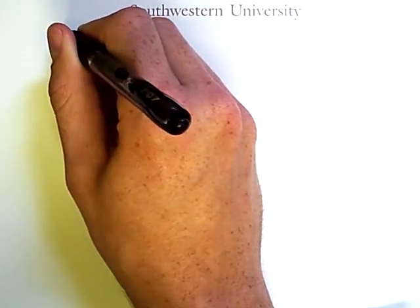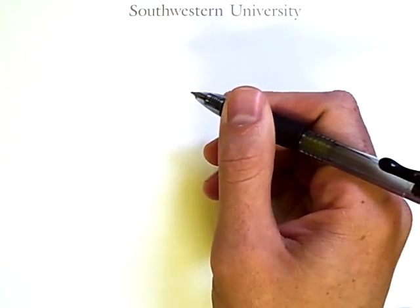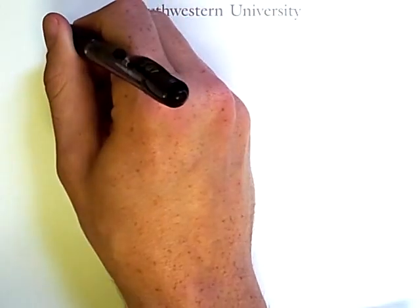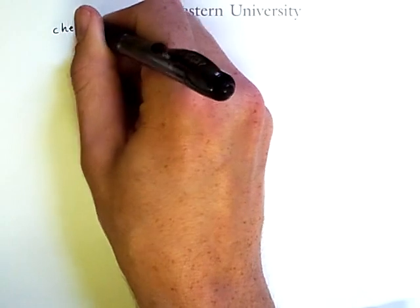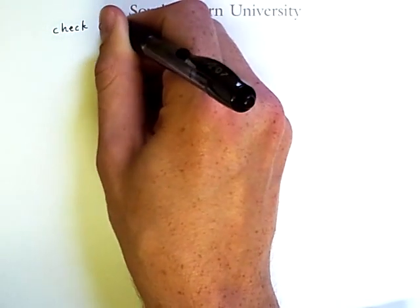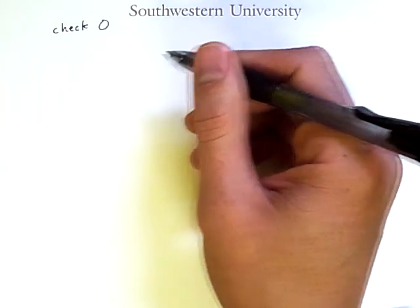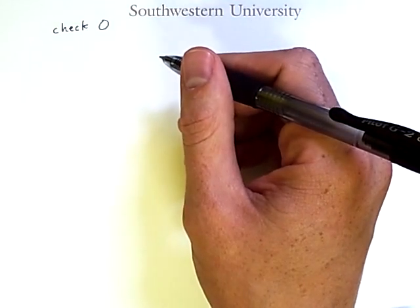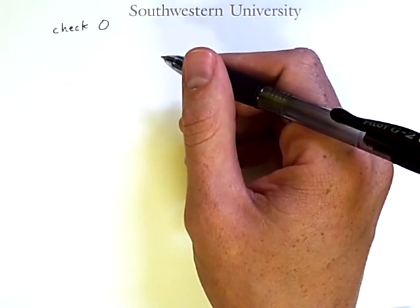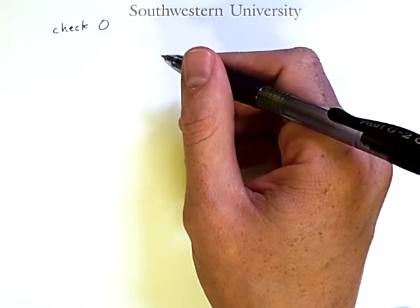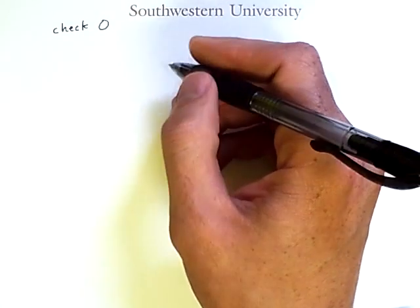In general, whenever you're doing addition, subtraction, multiplication, or division, you often need to check to see if either of the values is zero. In the case of addition, this means you don't have to do the addition. And in the case of multiplication, it means your answer will always be zero. So that's an easy check to do.